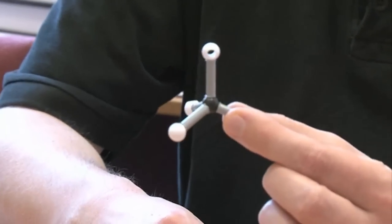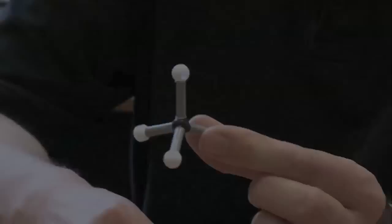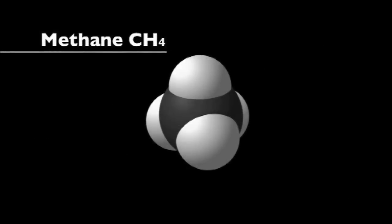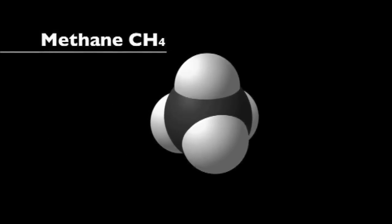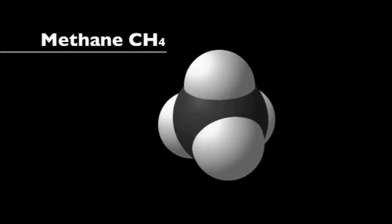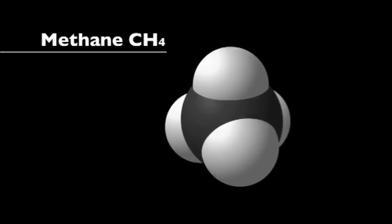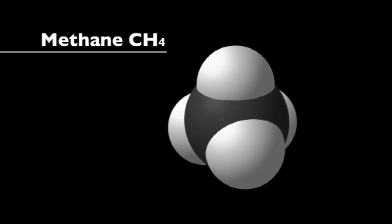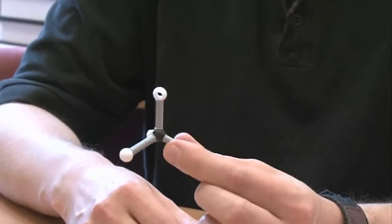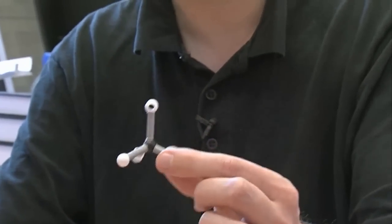It's been known for a long time now that four-coordinate carbon, so that's carbon with four bonds, would form what we call a tetrahedral shape. So this is a tetrahedral shape here. A hundred years before I was born, a guy called Van't Hoff proposed this, and this was revolutionary at the time. This became a real cornerstone of chemistry. If you say four-coordinate carbon to people, they immediately think it's a tetrahedral shape like this.